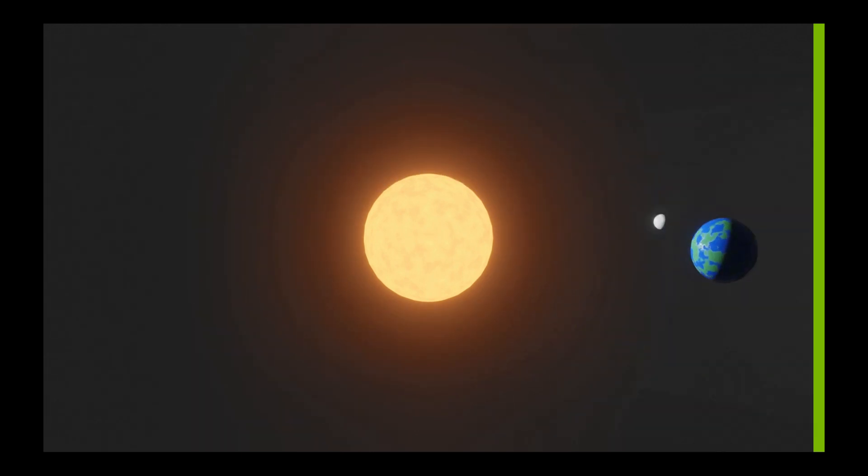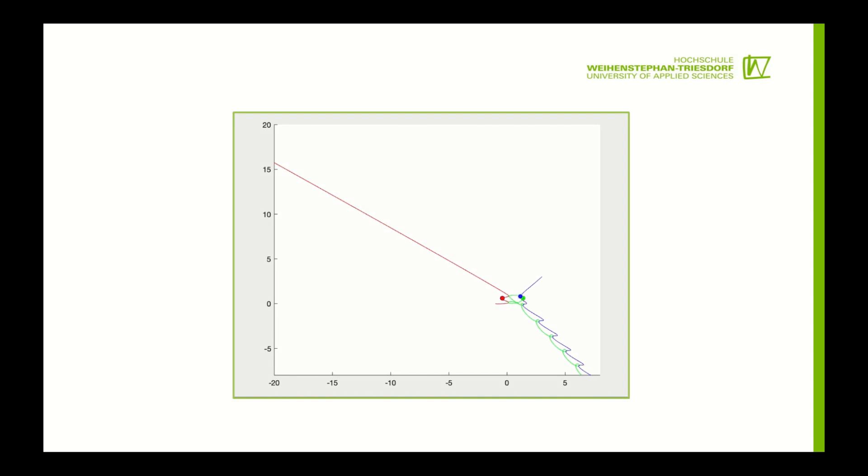We ran a simulation of three equal masses with MATLAB and as you can see the red body got kicked out of the system. Also notice that the motion of the remaining two bodies is going into the opposite direction of the kicked out body since the total impulse of the system must always be maintained.